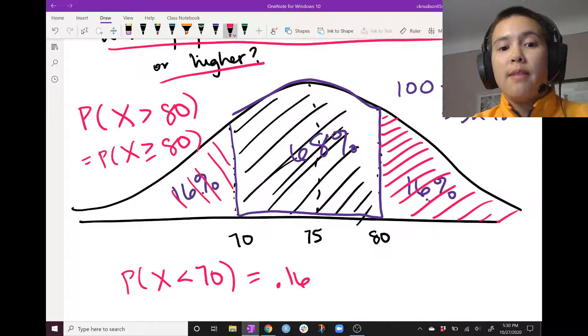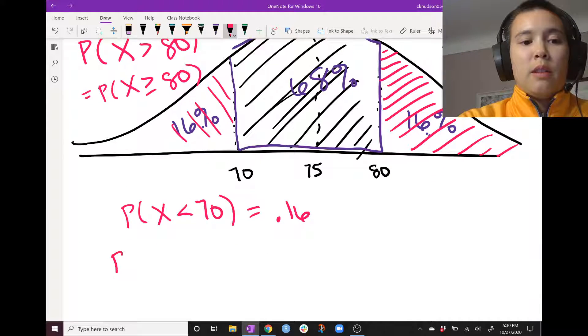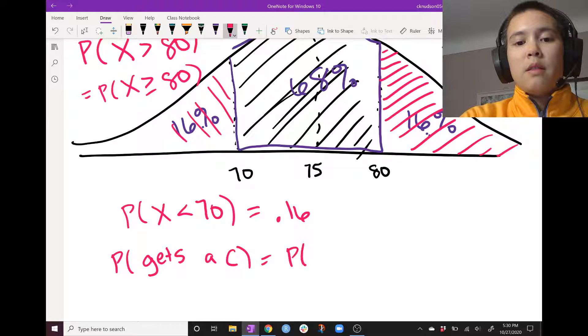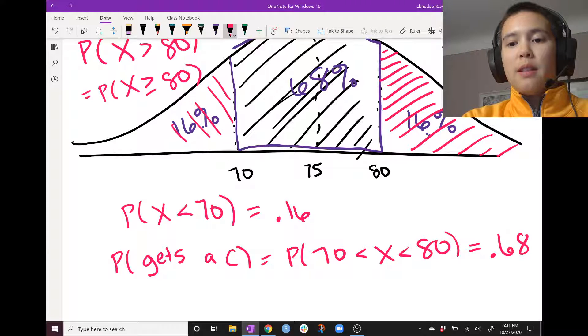And if we have 70% to 80% is a C, then the probability that a student gets a C is 68% or 0.68.